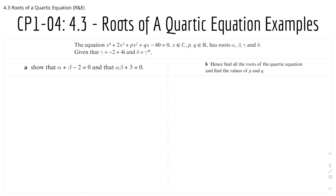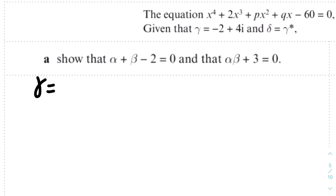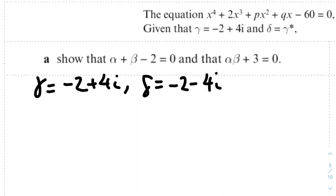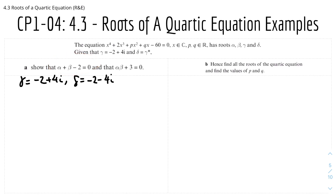Moving on to a question — roots of a quartic equation example. The equation x⁴ + 2x³ + px² + qx − 60 = 0 has roots alpha, beta, gamma, and delta. Given that γ = −2 + 4i and δ is the complex conjugate of γ, show that α + β − 2 = 0 and that αβ + 3 = 0. From the given information, γ and δ are complex conjugates, so δ = −2 − 4i. The first part concerns only the sum of roots — no pairs, triples, or quadruples.